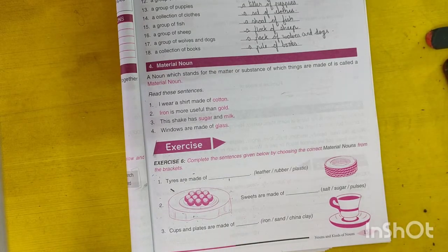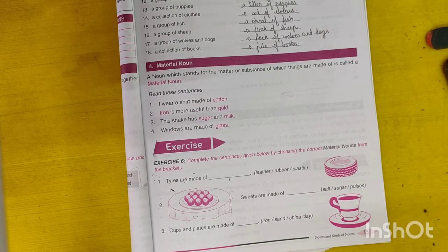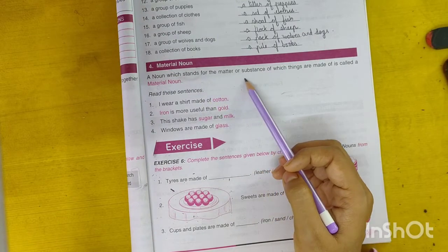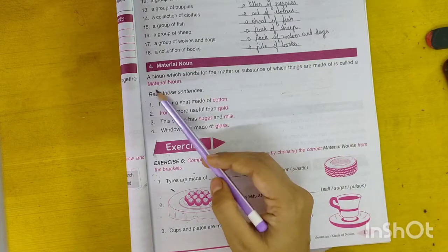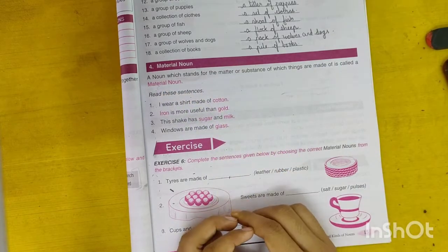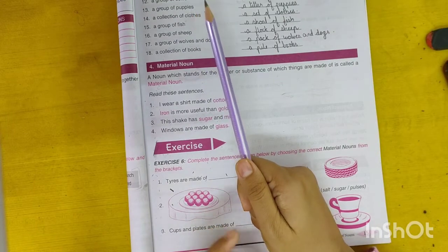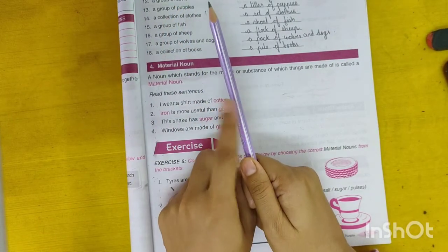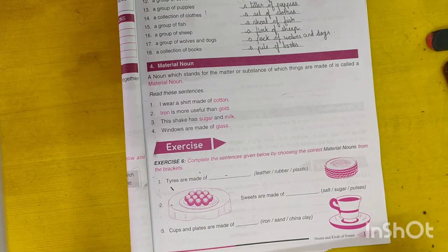Now, the next kind of noun is material noun. A noun which stands for the matter or substance of which things are made of is called material noun. For example, this is made up of lead and wood. So here, wood is a material noun.